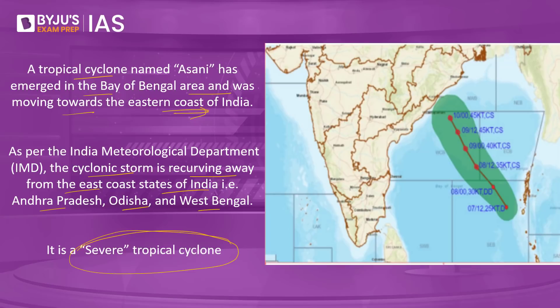As of the recent updates, Cyclone Asani is not going to make landfall in Andhra Pradesh. Instead, it is curving towards the eastern part of India. Since it is not making landfall in Andhra Pradesh, the impact will be comparatively less. It is unlikely to make landfall and could slowly recurve northwards, moving towards the Visakhapatnam coast and emerging into the western central Bay of Bengal.